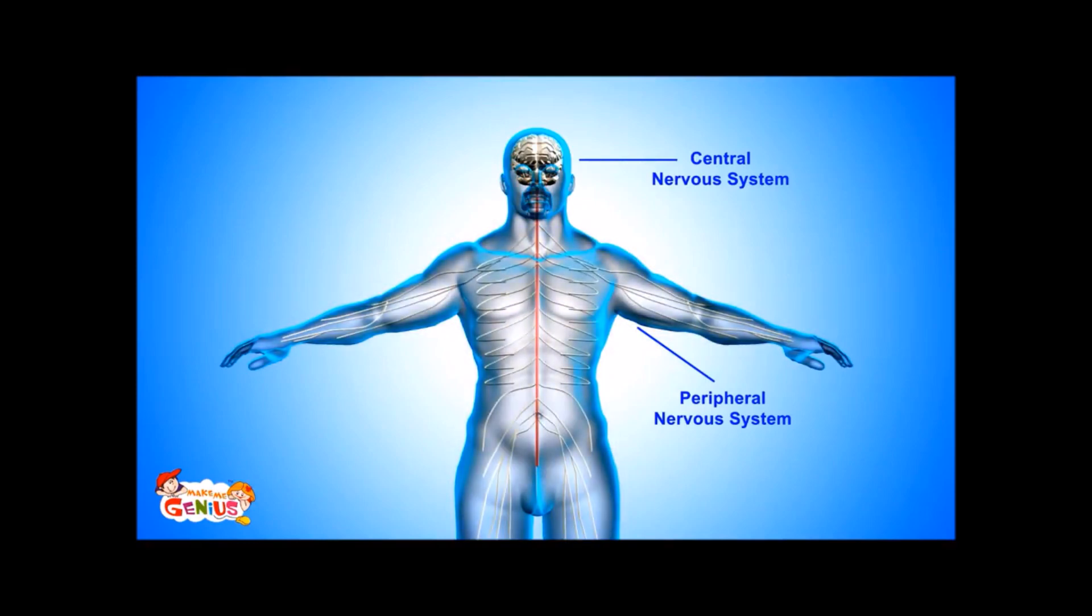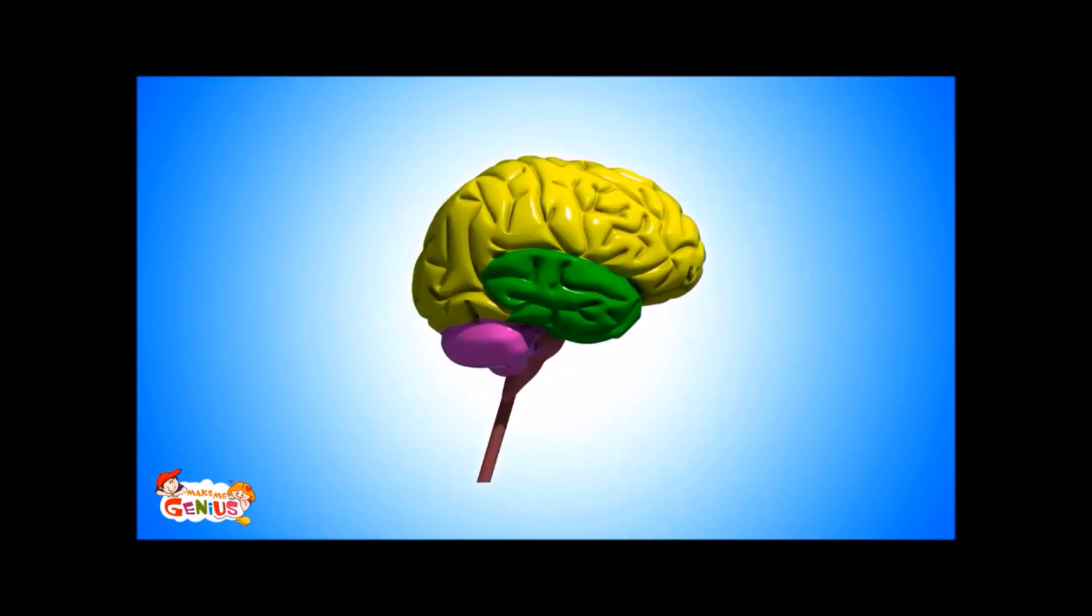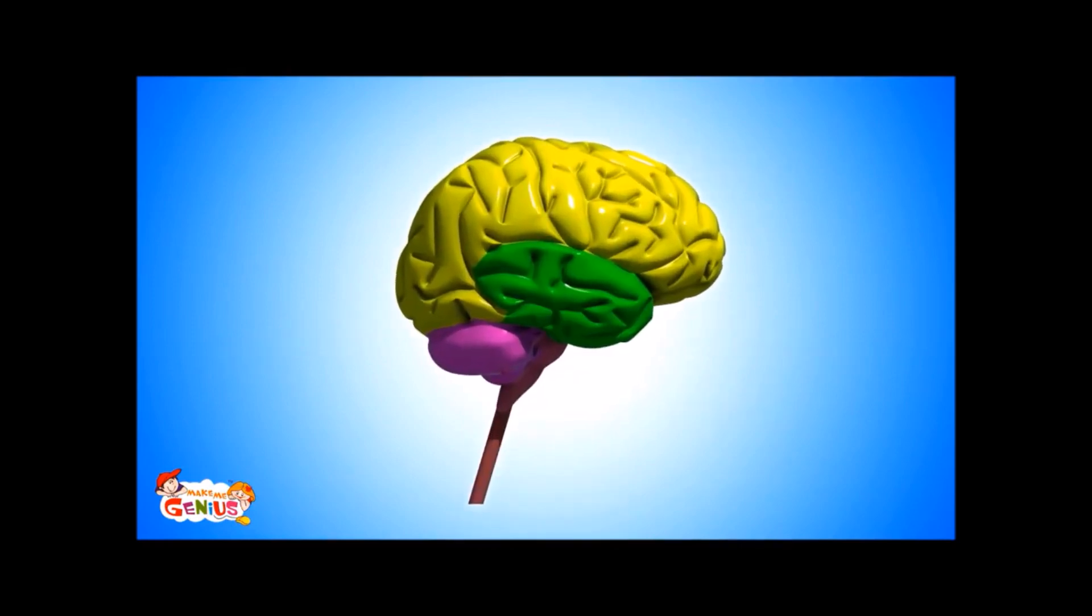The central nervous system is comprised of the brain and spinal cord. The peripheral nervous system consists of many nerves which are spread throughout the body. Let's first understand the brain, its parts, and what they do.